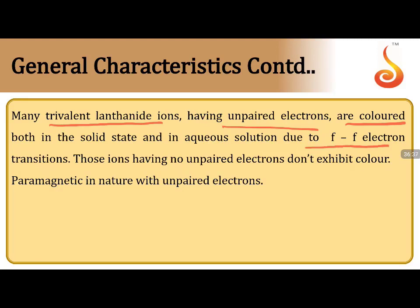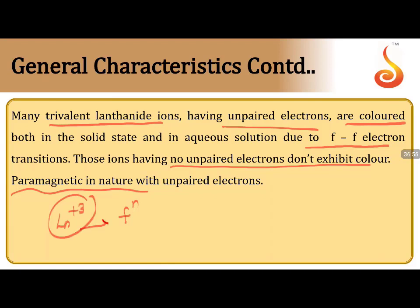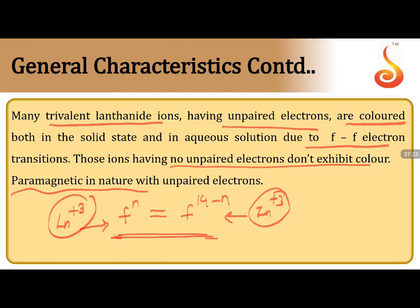An important rule: in the +3 oxidation state, a lanthanide with fⁿ electronic configuration shows the same color as the lanthanide with f^(14-n) configuration. It is better to learn elements in order from cerium to lutetium so that questions about which elements show the same color can be answered easily.